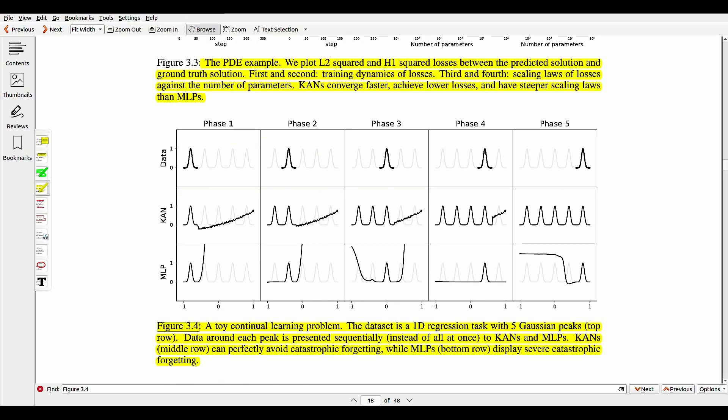The researchers also found that CANs have a natural ability to avoid catastrophic forgetting, at least in a toy case. This is the graph that they are showing for this performance aspect of CAN, a toy continual learning problem. The dataset is a one-dimensional regression task with five Gaussian peaks. Data around each peak is presented sequentially instead of all at once to CANs and MLPs. CAN, that is the middle row, can perfectly avoid catastrophic forgetting while MLPs, that is the bottom row, display severe catastrophic forgetting.